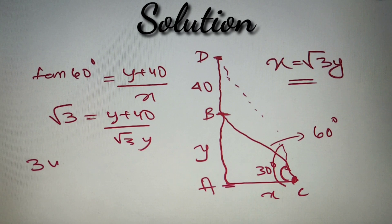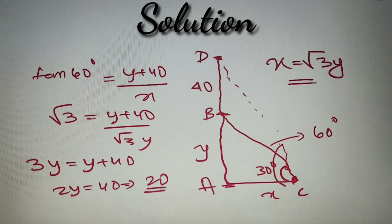Now upon cross multiplying, we get 3y is equal to y plus 40, or we will say 2y is equal to 40, or the value of y is simply equal to 20.